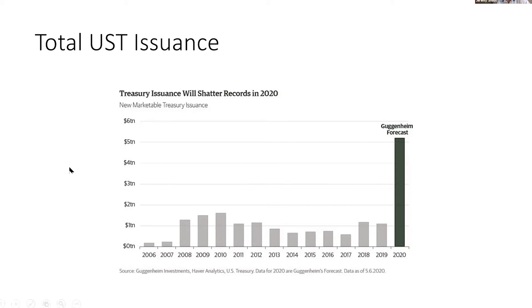So just to make sure this is correct — as the federal government we're collecting $3.5 trillion, we are borrowing $5 trillion, which means we have total expenditures of around $8.5 trillion. Yes, that's what the consensus expectation is.